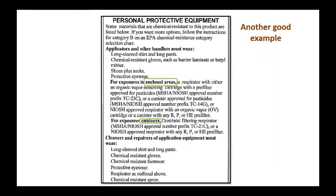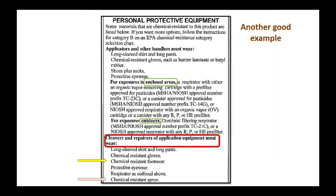Here's another example of the importance of reading the entire PPE section. Notice the different respiratory protection required when working in enclosed areas versus outdoors. The label also states that handlers who clean or repair application equipment must wear chemical-resistant footwear and a chemical-resistant apron, in addition to a long-sleeved shirt, long pants, chemical-resistant gloves, protective eyewear, and respiratory protection required when applying the product.